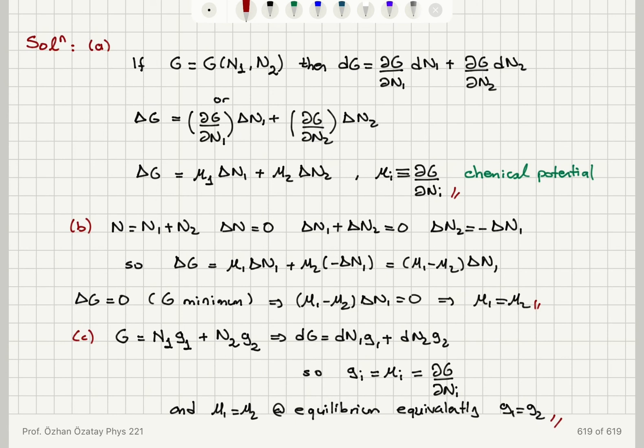We must therefore have μ₁δn₁ + μ₂δn₂ = 0. Since the total number of molecules is constant, δn₁ = −δn₂, so substituting gives μ₁ = μ₂. Furthermore, since the total Gibbs free energy equals n₁g₁ + n₂g₂, we find that gᵢ = μᵢ — the partial derivative of G with respect to n. So the equilibrium condition g₁ = g₂ is equivalent to μ₁ = μ₂.